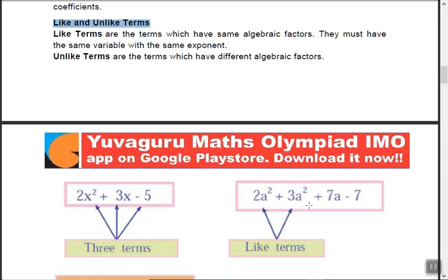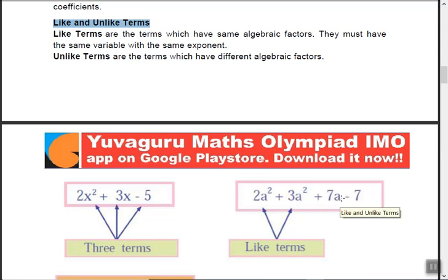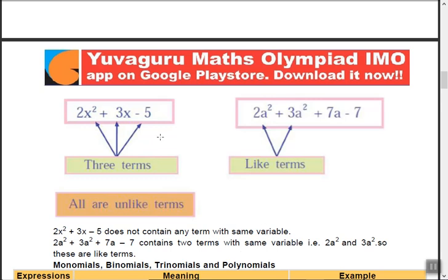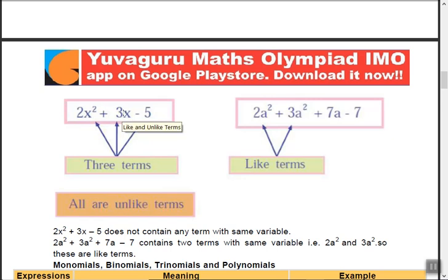In 2x squared plus 3x squared plus 7a minus 7, the terms 2x squared and 3x squared have the same variable and same exponent, so they are like terms. But 3x squared and 7a have different variables (x and a), so they are unlike terms. For unlike terms: if in place of x there is y, giving 2x squared plus 3y — different variables — those are unlike terms. Like terms: same variable, same exponent. Unlike terms: either different variable or different exponent.